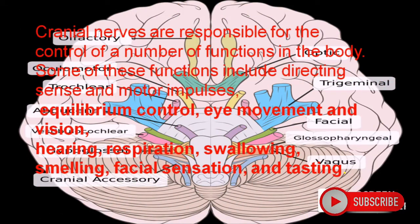Cranial nerves are responsible for the control of a number of functions in the body. Some of these functions include directing sense and motor impulses, equilibrium control, eye movement and vision, hearing, respiration, swallowing, smelling, facial sensation, and tasting.